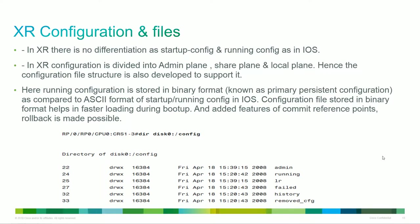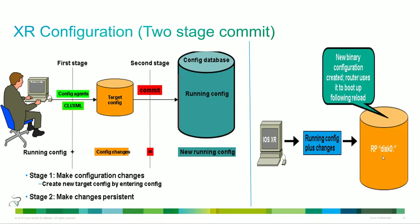Our configuration is pretty similar to IOS, except there's no difference between startup and running config. The first thing you do is configure from the running load. Once those changes are committed, that becomes the new running config. The new running config is our startup config. So we're not actually making changes on the fly — we make the change, configure the change, commit the change, and then it actually does the configuration within the database. That's what it loads.